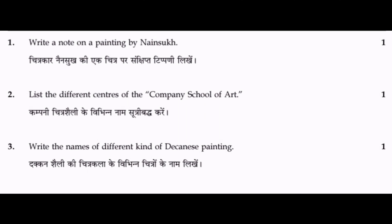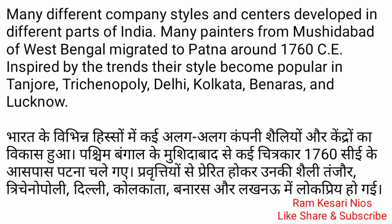Question 2: List the different centers of the Company School of Art. Many different company styles and centers developed in different parts of India. Many painters from Murshidabad of West Bengal migrated to Patna around 1760 CE. Inspired by the trends, their style became popular in Tanjore, Trichinopalli, Delhi, Kolkata, Banaras and Lucknow.